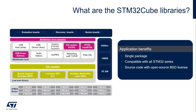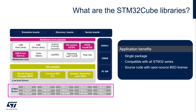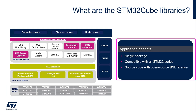The STM32 Cube libraries are delivered by series — one library per inner series of STM32. For example, you have the STM32 Cube G0 for the STM32 G0 series, the STM32 Cube L4 library for the STM32 L4, and the STM32 Cube WB for the STM32 WB series, and so on. These libraries have common modules with fully compatible APIs, which make them compatible with all STM32 series.